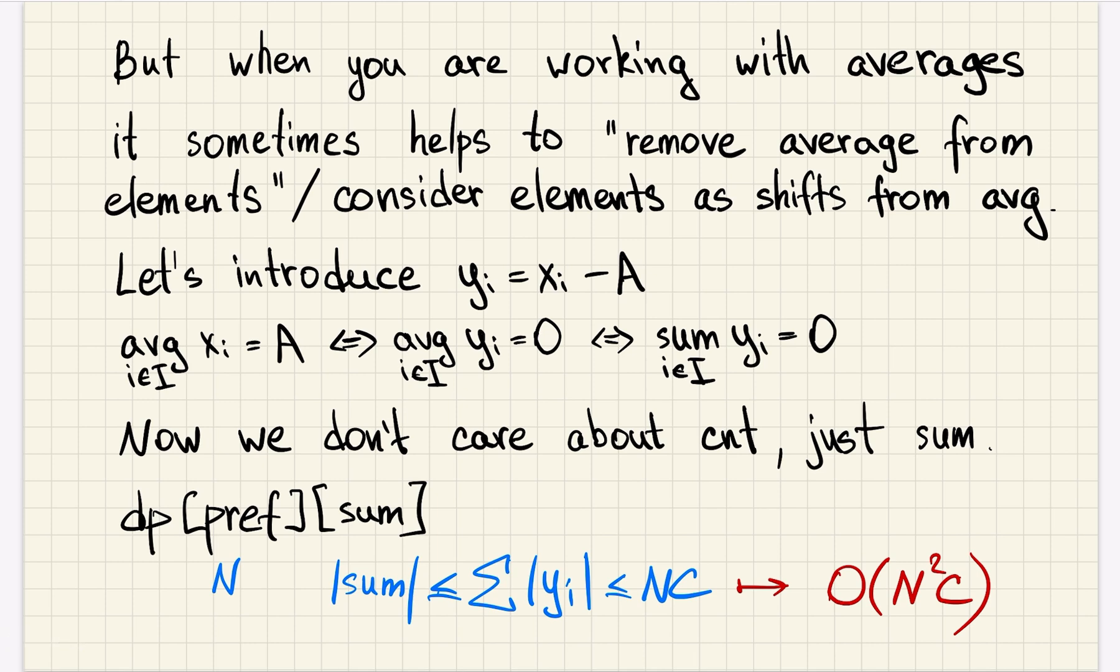When you're working with averages, it sometimes helps to remove the average from all the elements. In this case, subtract, but there are different averages. So you should consider elements not as elements on their own, but like how different are they from the average. So we will consider elements to be shifts from average. So we are given x_i, but if we introduce y_i, which is equal to x_i minus A, which is the average we want.